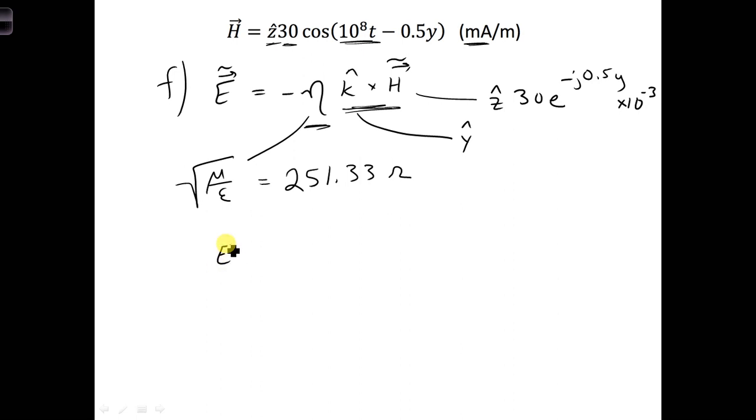So putting all this together, we get an electric field vector phasor. We multiply 30 times 10 to the minus 3 times this 251, and we're going to get 7.54. Then for the direction, we have to take y-hat crossed with z-hat. So for that, we get x-hat, and then there's a minus sign in front. I'm going to put that there, and then the exponential doesn't change. So we just have e to the minus j 0.5y, and that's volts per meter.